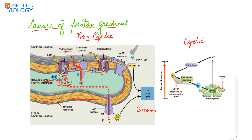When photosystem 2 gets excited, it passes electrons to plastoquinone. Plastoquinone, being a hydrogen acceptor, takes protons from the stroma, then separates those protons releasing them into the thylakoid lumen, and allows the electrons to pass through the cytochrome complex to photosystem 1. This release of protons into the thylakoid lumen by plastoquinone is the second reason for the proton gradient.